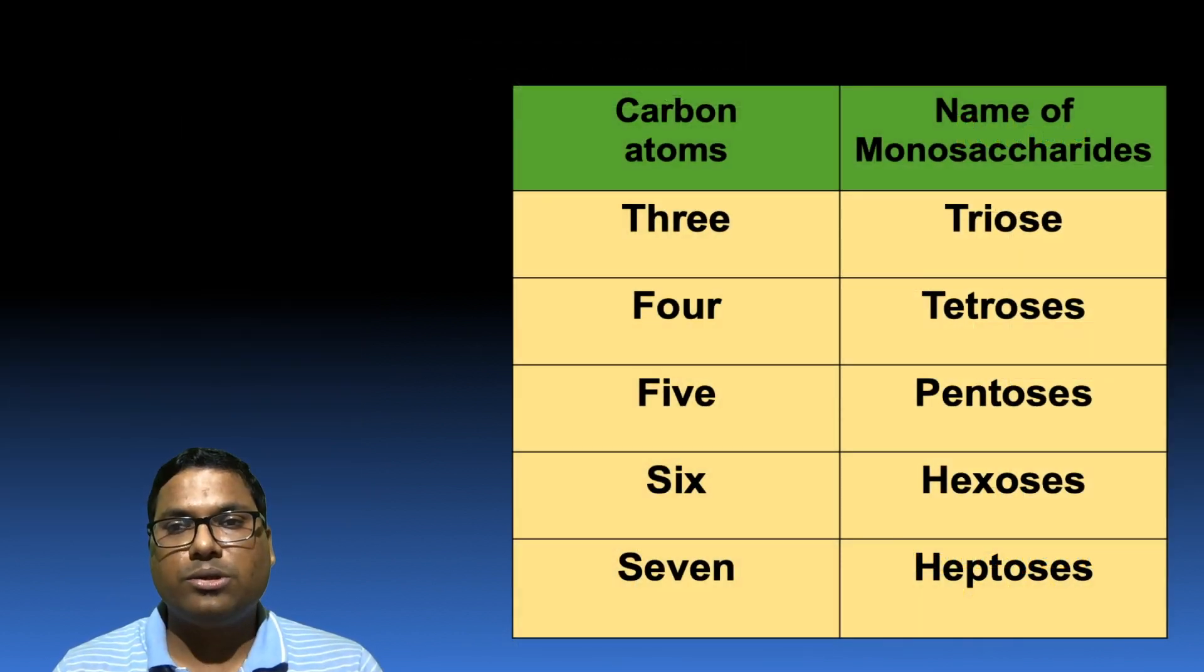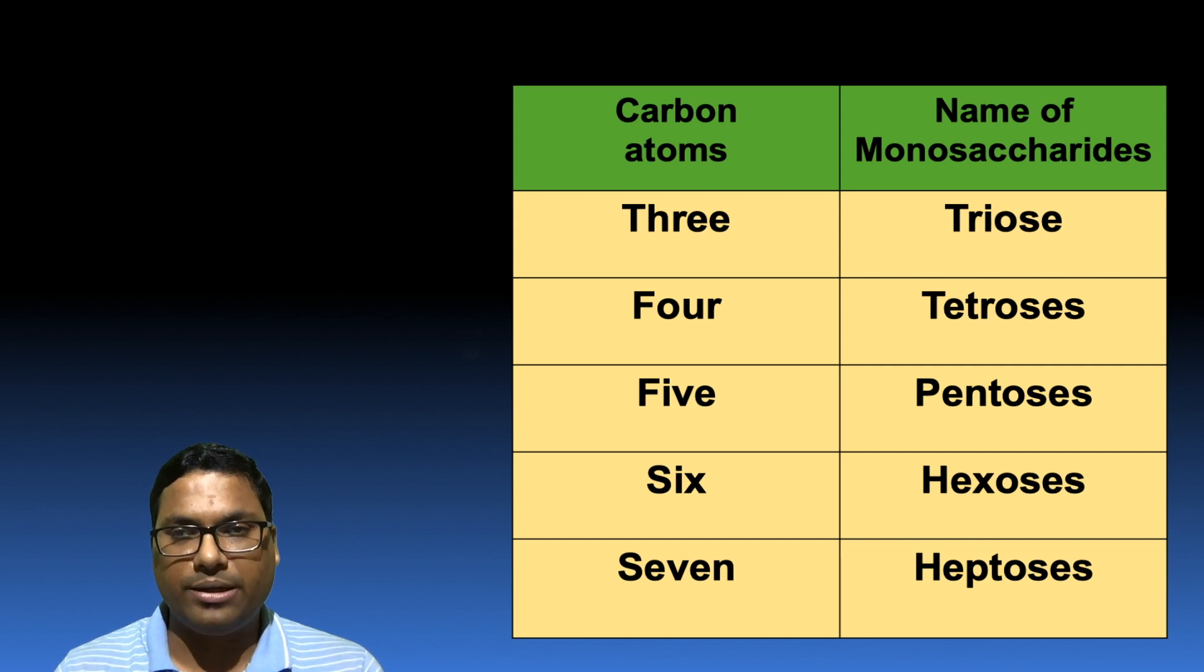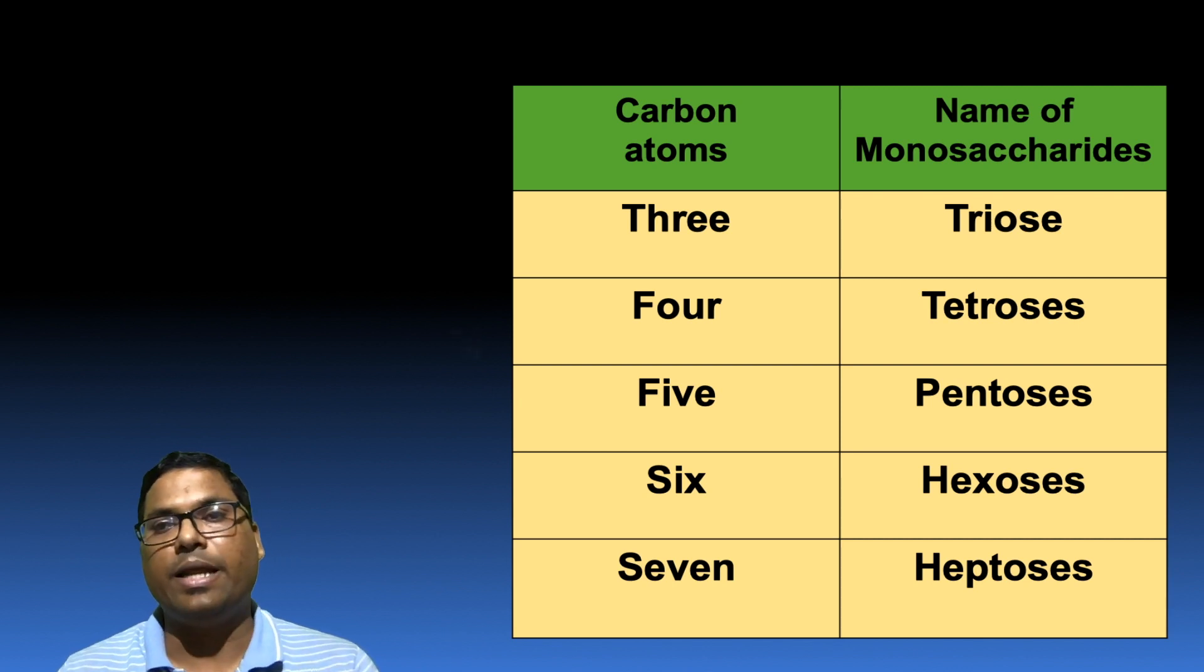Now based on the number of carbon atoms, monosaccharides are divided into different categories. If the carbon atoms present in the monosaccharides are three, then that is called triose. If they are four, then that is referred as tetrose, and if they are having five, pentoses. If six carbon atoms are there, then hexoses, and if seven carbon atoms are there in a molecule of monosaccharide, then it is called heptoses.